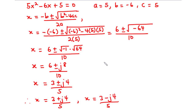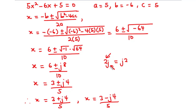Note that 2j is the same as j2. Normally, because we are used to writing numbers before letters, we usually write 2j instead of j2. However, either of them is correct.